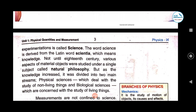Not until the 18th century were various aspects of material objects studied under a single subject called natural philosophy. Before the concept of science existed — up to the 18th century — people gained knowledge through natural philosophy. Natural philosophy held that whatever process is occurring, it is because of nature. But God has placed some wisdom and logic in every such process, and finding that logic is what we call science. So science gave us that logic. As knowledge increased, it was divided into two main streams: physical sciences and biological sciences.